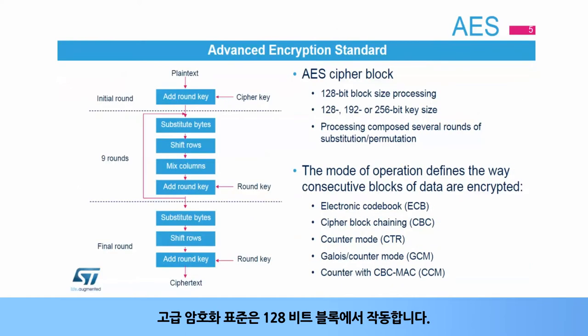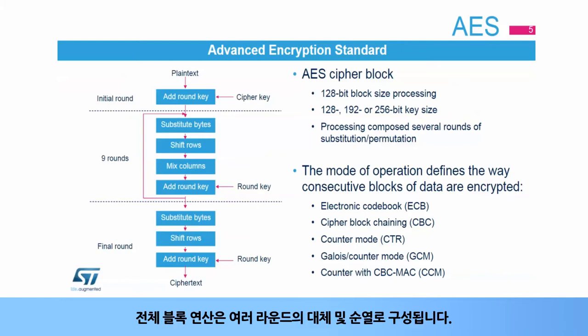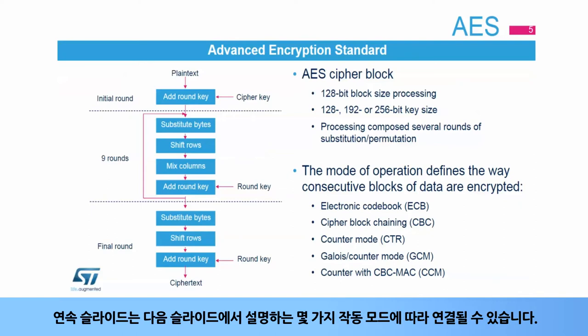Advanced Encryption Standard works on a block of 128 bits. Encryption or decryption can be done using a key of 128, 192, or 256 bits. A full block operation is composed of several rounds of substitution and permutation. The diagram shows the operations for an AES encryption using a 128-bit key. Successive blocks can be chained following several operating modes, described in the next slides.